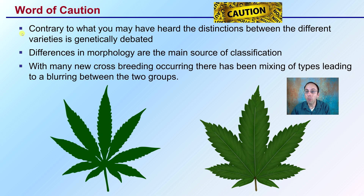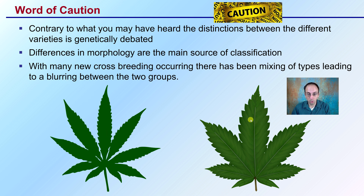Contrary to what you may have heard, the distinctions between the different varieties are genetically debated. Differences in morphologies are the main source of classification. With many new crossbreeding events occurring, there's been mixing of types, leading to blurring between the two groups. For example, this leaf morphology has a strong sativa indication, where the one right below me has more of an indica morphology. But keep in mind, with the hybrids and the breeding that's occurring, you can get a blending or mixing of the two quite often — even though you might look at a quick image and say 'sativa' or 'indica,' there may be more to it than just that.